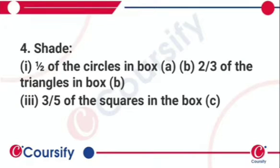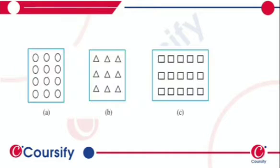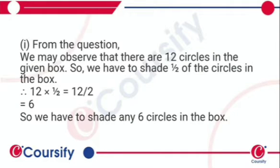Shade 1/2 of the circles in box A and B, 2/3 of the triangles in box B, and 3/5 of the squares in box C. So A, B, C are given. We have to color them from the question.